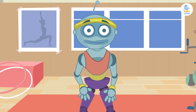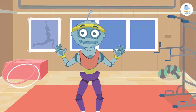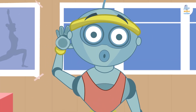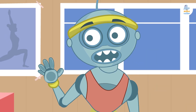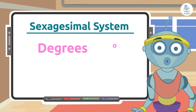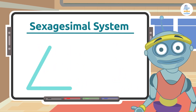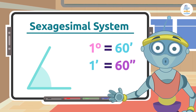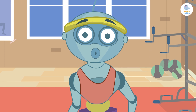Hello, my angle-loving friends! Welcome to my new gym. How about I teach you to add angles? We use the sexagesimal system to measure angles, which uses degrees, minutes, and seconds as units. One degree is equal to 60 minutes, and one minute equals 60 seconds. Today we'll learn how to add angles — with some examples you'll see how easy it is!